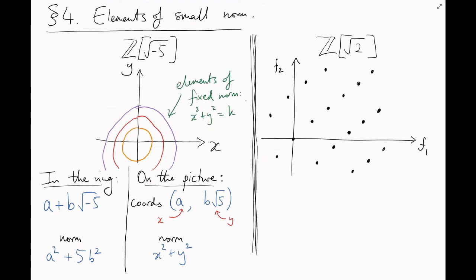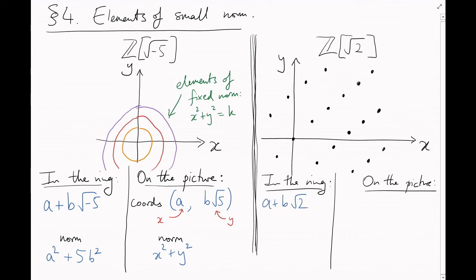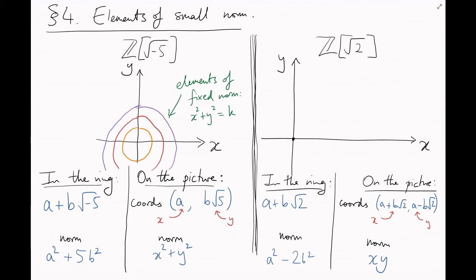Let's do the same for the right hand picture. Now for consistency I'm going to call the axes x and y again, but remember there secretly are embeddings f1 and f2. Now the element a plus b root 2 has x-coordinate a plus b root 2, and y-coordinate a minus b root 2. And the element a plus b root 2 has norm a squared minus 2b squared, which we can recover from the coordinates x, y by multiplying them to get x times y. Okay, I'm going to hide the points again. Where in this picture are the elements of norm 1? Well, they lie on the curve x times y equals 1, which is this double hyperbola here. Similarly, here are the elements of norm 2, of norm 3, and so on. There are also elements of norm minus 1, minus 2, and so on.